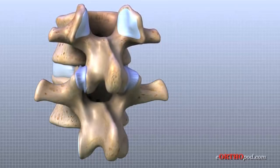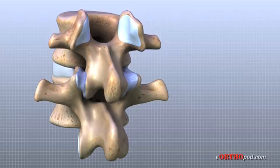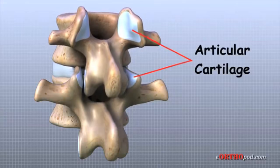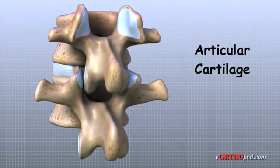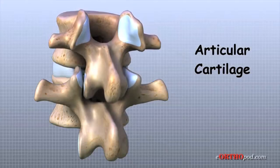The surfaces of the facet joints are covered by articular cartilage. Articular cartilage is a smooth rubbery material that covers the ends of most joints. It allows the bone ends to move against each other smoothly without friction.